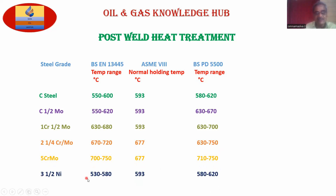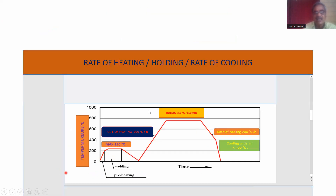3 and a half nickel steel: 300 degrees Celsius minimum, 530 degrees Celsius holding, with a range of 530 to 580 degrees Celsius. Holding time 593 degrees Celsius. Temperature range per BS PD 5500: 580 to 620 degrees Celsius. These cover the main standards and temperatures for different steel grades.